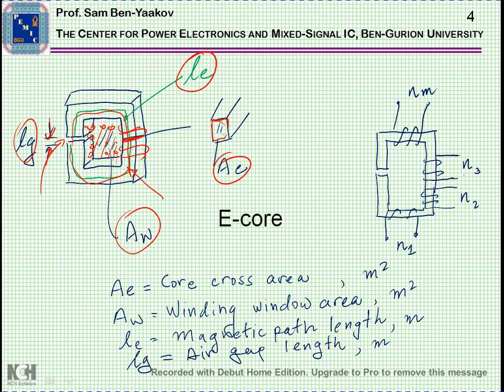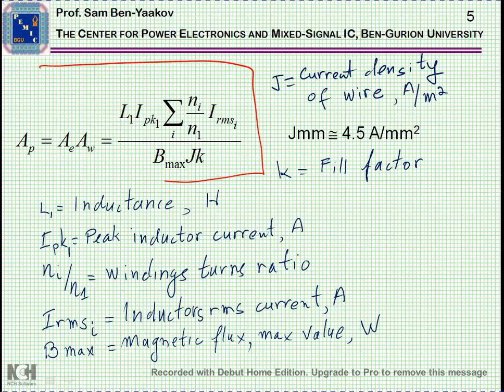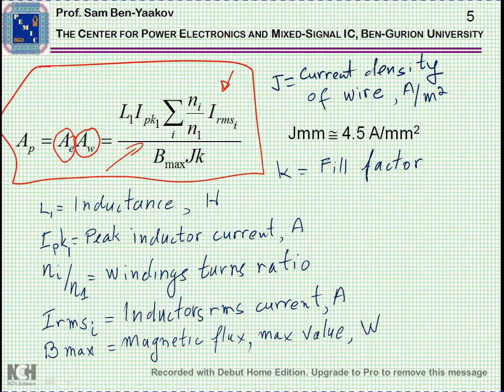Now, the core will be wound with two windings, or more, depending whether you have one output or a number of outputs. The basic equation for the design is this AP. The AP is the product of the core cross section area and the window winding area. The product of these are given by this formula. The nice thing about this formula, this equation, is that it contains all parameters that you are supposed to get from the electronic design of the circuit.